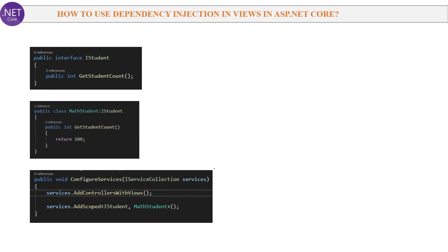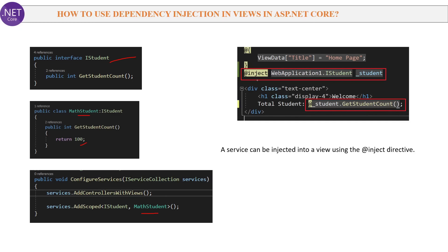Next question: How to use dependency injection in views in ASP.NET Core? First you must know how DI works for controllers. Suppose we have an IStudent interface with a MathStudent class implementing it. We configure this service in ConfigureServices of the startup class. Now if we want to display the student count directly on a view, we use the inject directive. The one-line answer is: a service can be injected into a view using the inject directive, as shown in the screenshot of a view.